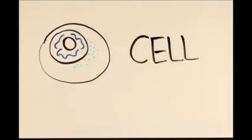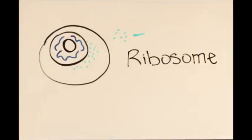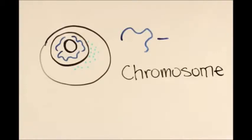Here we have a cell. The green stuff are the ribosomes, and the blue stuff are the chromosomes. And today we are going to learn about how a cell goes from genes to proteins.